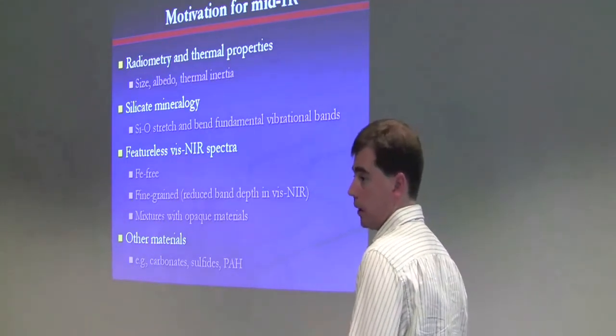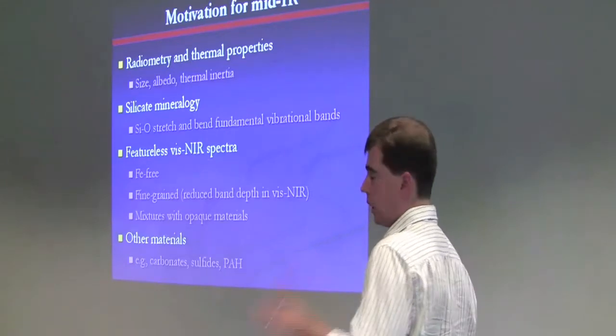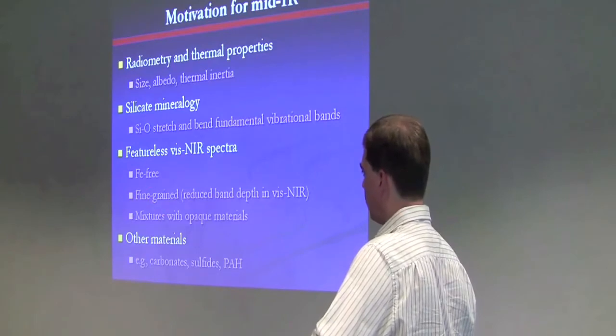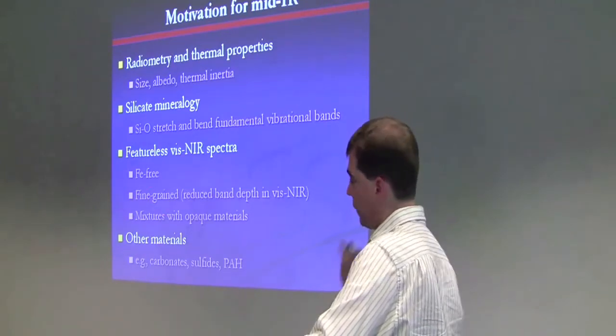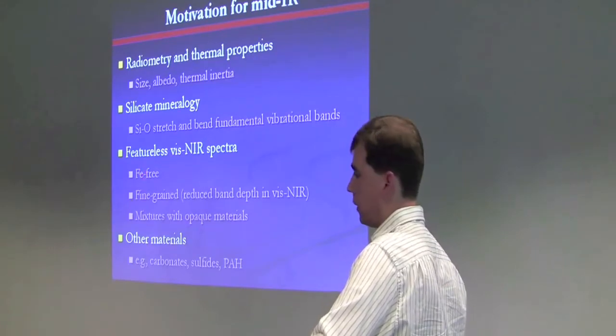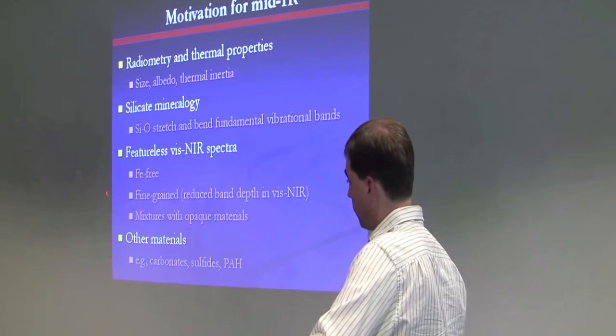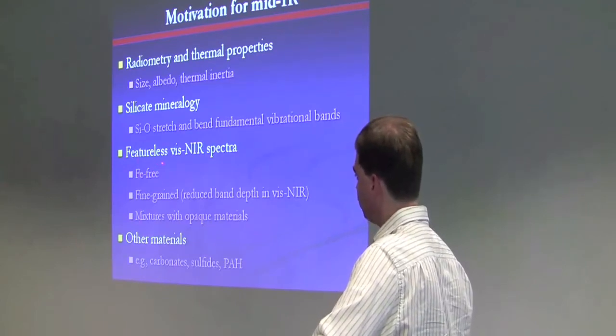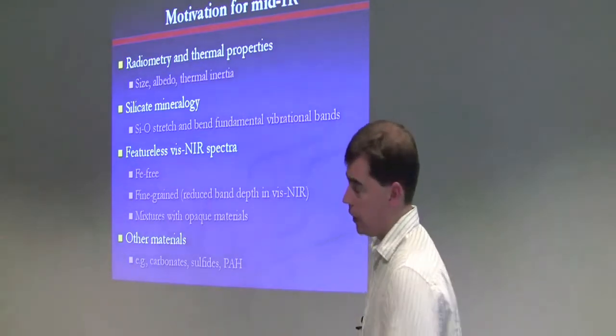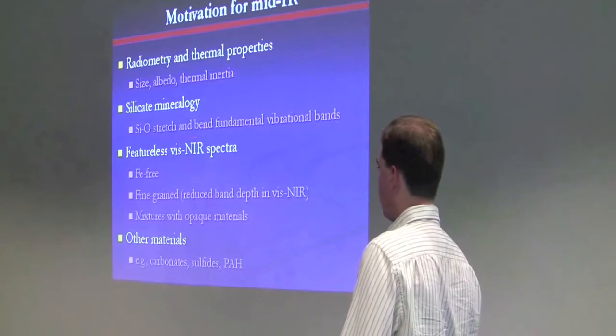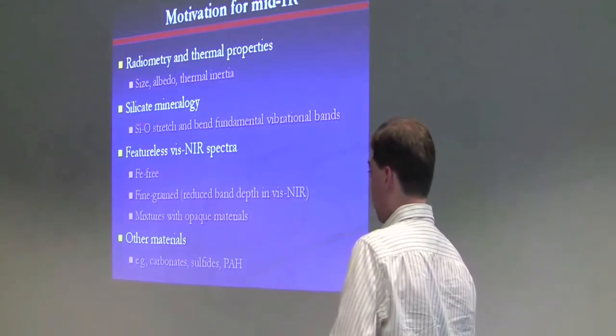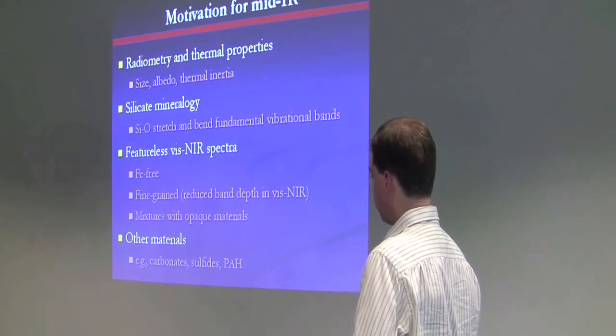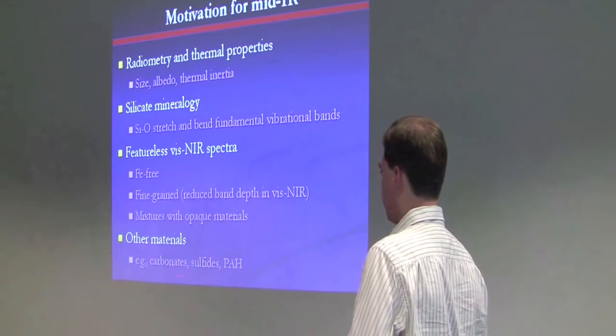So, especially for objects that have spectra that are featureless in the visible and near-infrared, those C-type asteroids, P and D-type asteroids, where we can't really determine the mineralogy well from the visible and near-infrared. Also there are iron-free silicates, those one and two-micron bands that I pointed out for the S-type asteroids are actually due to electronic transitions in the iron atom, and silicates without iron don't have those one and two-micron bands. So these featureless spectra, we can't really determine the mineralogy from the visible and near-IR, but going out to the mid-IR will allow us to directly look for these strong fundamental bands.